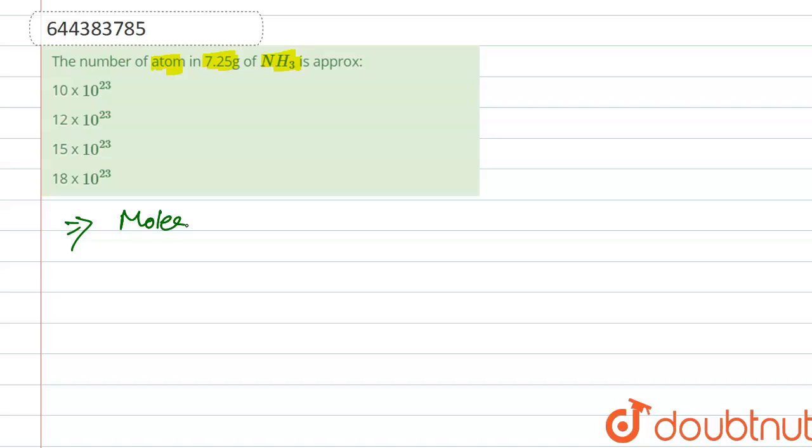Moles of NH3, which is equal to 7.25, that is given weight upon molecular weight, that is 17.